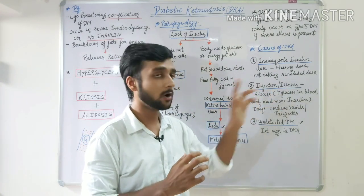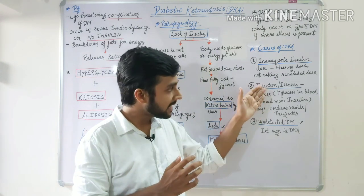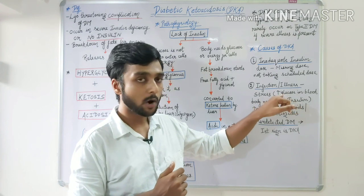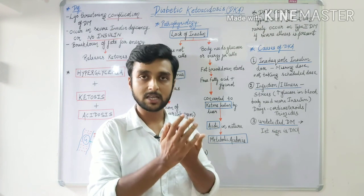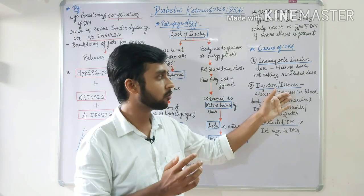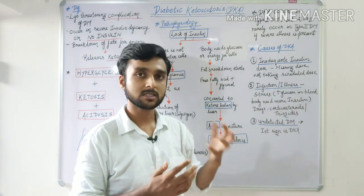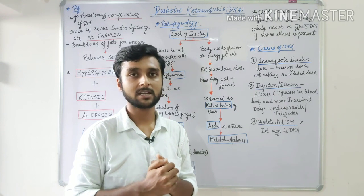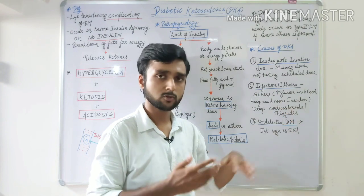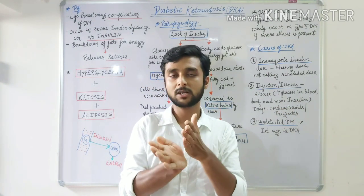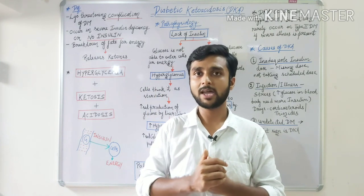The second cause is infection, illness, or stress. As mentioned earlier, in these conditions the glucose level in our body rises greatly, and to transport this glucose we need insulin. This excessive glucose cannot be transported because insulin demand increases and supply is insufficient, so the patient can go into DKA. Some drugs like corticosteroids and thiazides also increase glucose levels, and the present insulin cannot meet that demand, leading to fat breakdown and DKA.